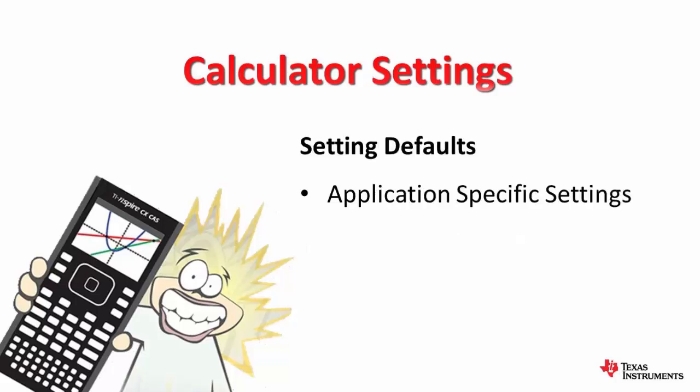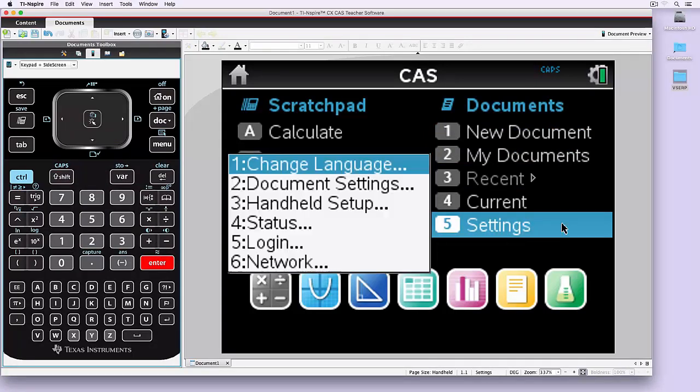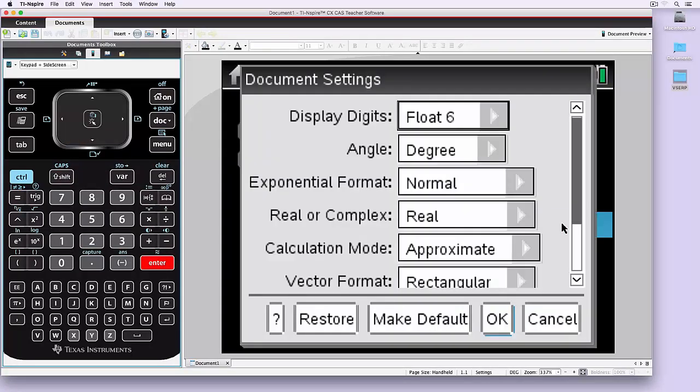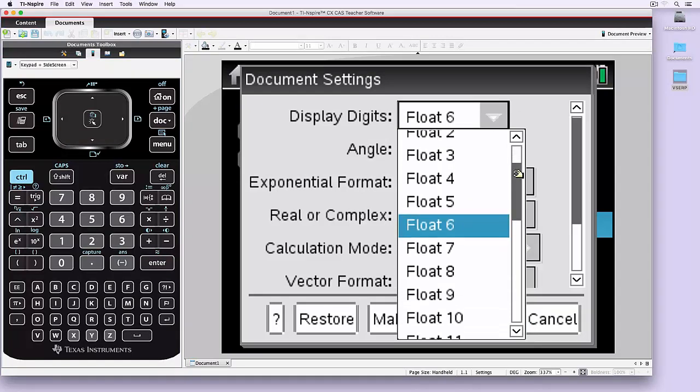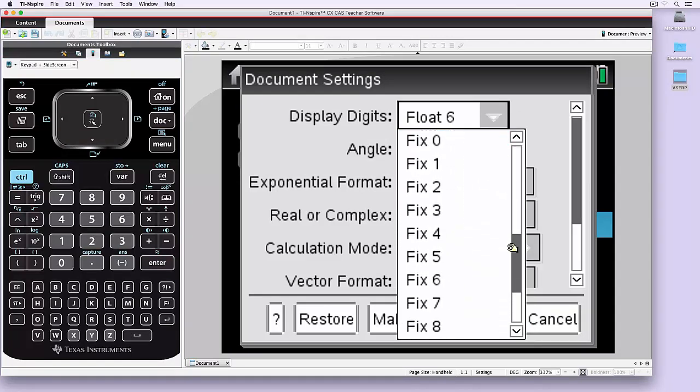We just go straight to settings and look at the document settings, and you'll notice it's float 6 as a default. And we have a range of different floats up to 12 points.